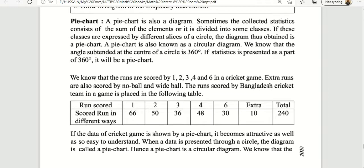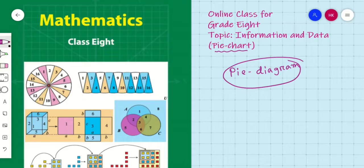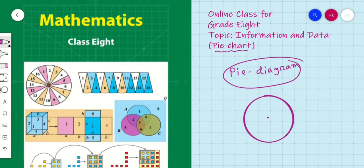So what is a pie chart? A pie chart is also known as a pie diagram. Sometimes the collected statistics consist of some elements, or it is divided into some classes. If these classes are expressed by different slices of a circle — different statistics, different numbers are expressed as slices of a circle — the diagram thus obtained is a pie chart. A pie chart is also known as a circular diagram. The angle subtended at the center of a circle is 360 degrees.